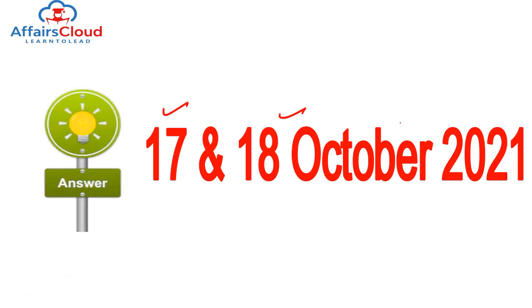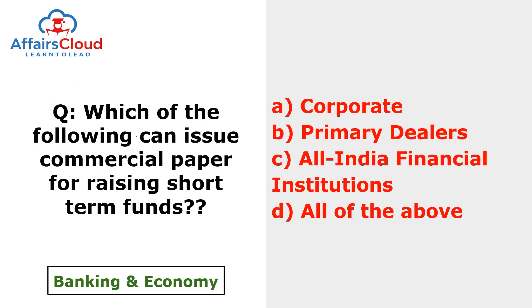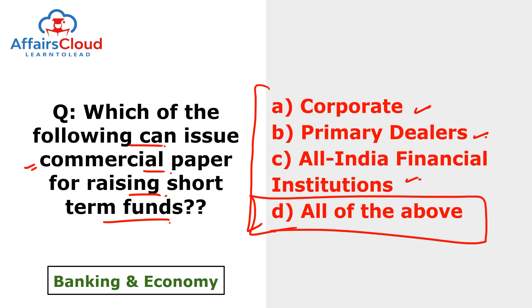Question of the day: which entities can issue commercial paper for raising short-term funds? The answer is all of these — corporates, primary dealers, and all-India financial institutions. A commercial paper is a money market security issued by large corporations to obtain funds to meet short-term debt obligations, backed only by the issuing bank or company's promise to pay the face amount on the maturity date.